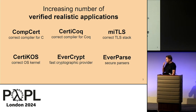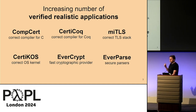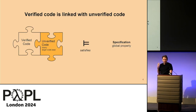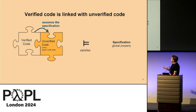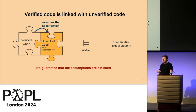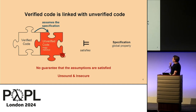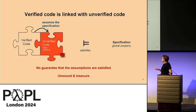Proof-oriented languages have been used to verify an increasing number of realistic applications, some integrated in tools like Firefox or Windows — such as cryptographic primitives from EverCrypt or EverParse. What we learn from these projects is that most often the verified code is linked with unverified code. In such a hybrid setting, we still want strong guarantees, but the specification of the unverified code is assumed, and none of the proof-oriented languages offer any guarantees that these specifications are actually satisfied — which can be unsound, and if the code is untrusted, also insecure, because the code can be buggy or malicious.